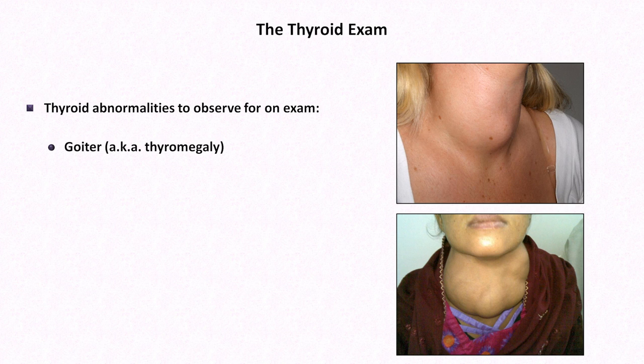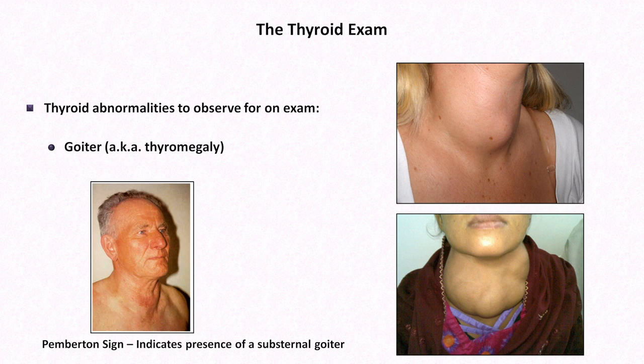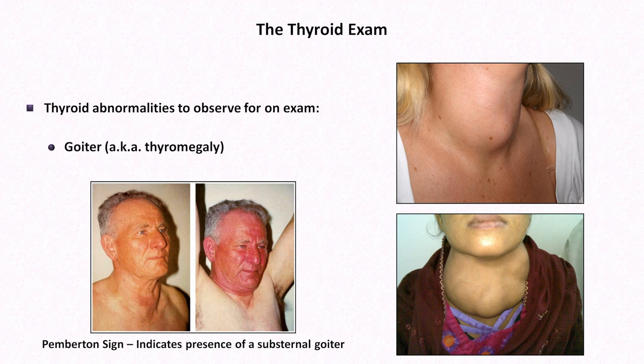A dramatic eponymous physical finding of a substernal goiter is called Pemberton sign. When a patient with such a goiter raises his or her arms over the head and holds them there for a minute or so, the face becomes red or occasionally cyanotic, with a sharp demarcation in the neck. The patient may feel fullness of the face or an unusual sensation in the head, but they are not typically dyspneic or dizzy. There are competing hypotheses about the precise mechanism, but all involve extrinsic compression of the great vessels against the enlarged thyroid, resulting in venous congestion of the head. It can also be observed in patients with SVC syndrome.